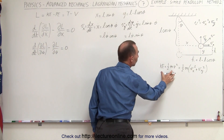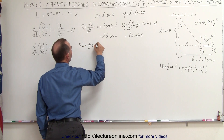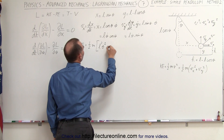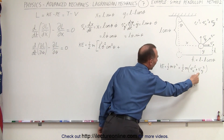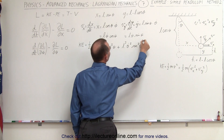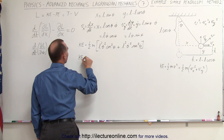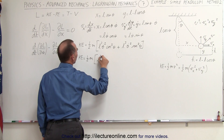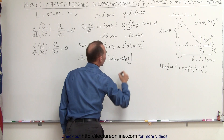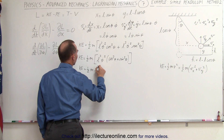Now we calculate the kinetic energy. The kinetic energy equals one-half times the mass, times v sub x squared — which is l squared theta dot squared times cosine squared of theta — plus v sub y squared — which is l squared theta dot squared times sine squared of theta. Factoring out l squared theta dot squared, the kinetic energy equals one-half times the mass times l squared theta dot squared, times the quantity cosine squared of theta plus sine squared of theta, which equals one. So the kinetic energy is one-half m l squared theta dot squared.